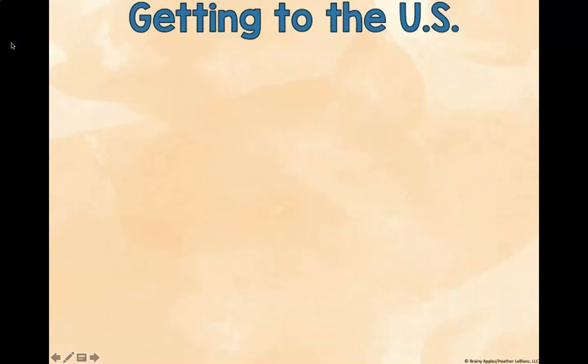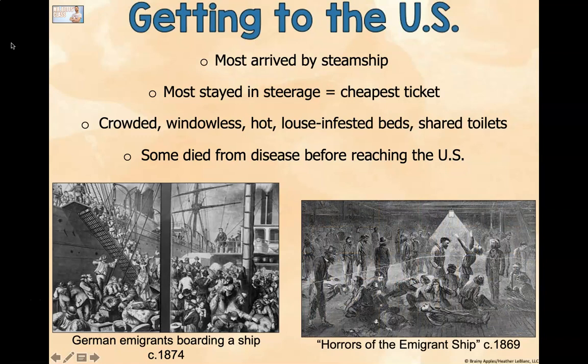Getting to the U.S. — this is going to discuss a lot of immigrants. The difference between immigration during this period versus now is that these immigrants came to the United States legally. They came through ports in San Francisco or New York and became citizens. Most immigrants arrived by steamship — planes were not a thing yet. Most stayed in steerage, the very bottom of the ship, which was the cheapest ticket.